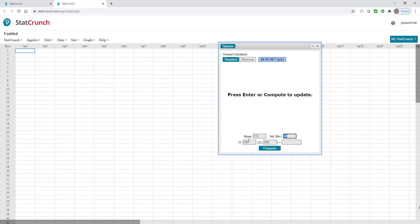And my standard deviation is 41. If I want to know what the probability of being less than 100, go back to standard, change it to less than, and then hit 100 and hit compute. And that gives me 0.0899.